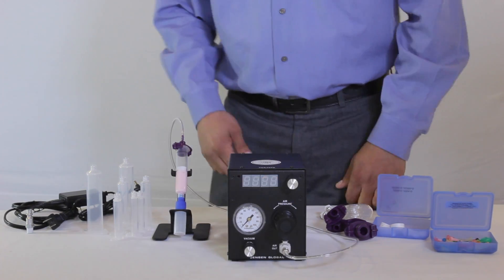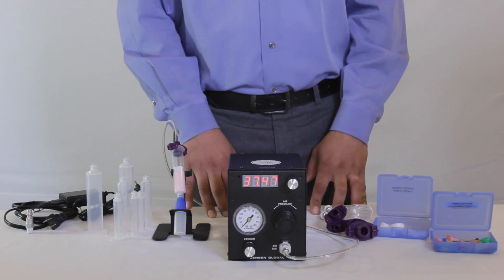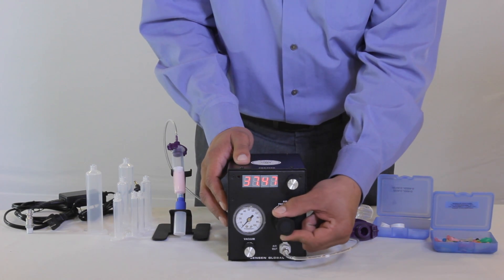Power on the dispenser by pressing the switch on the back of the unit. Adjust your air pressure to 5 psi as a starting point. Now the unit is ready to start dispensing.